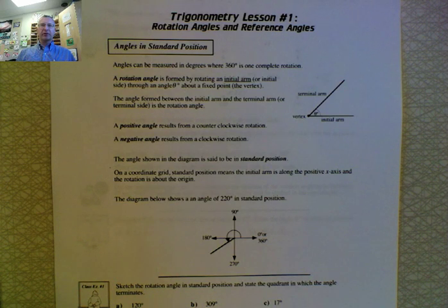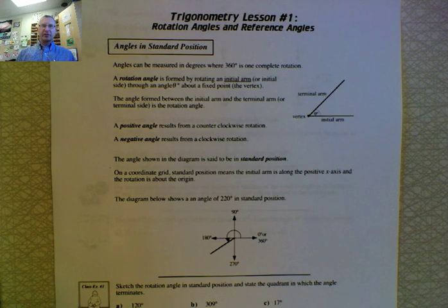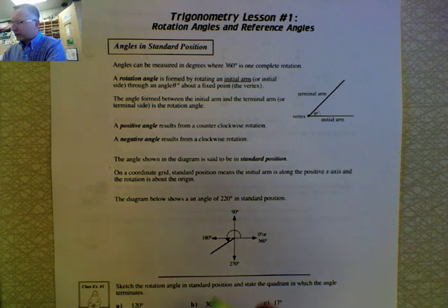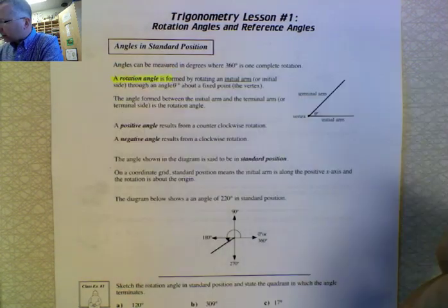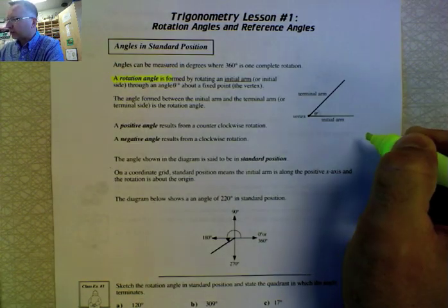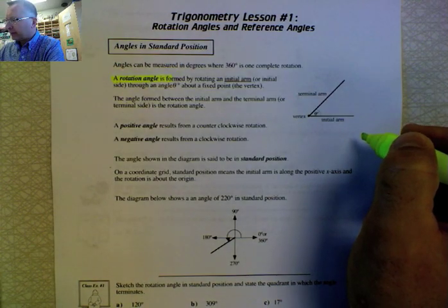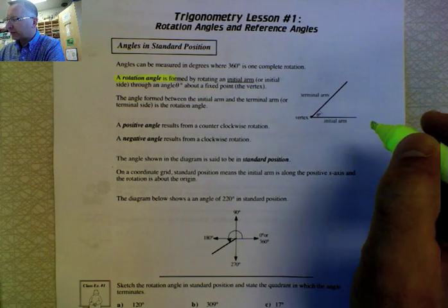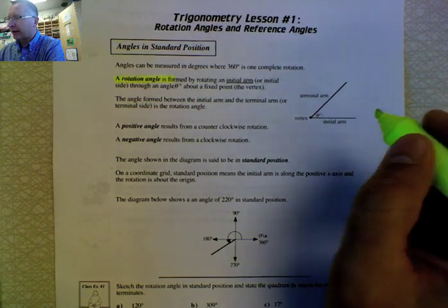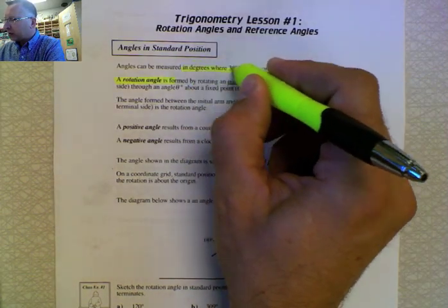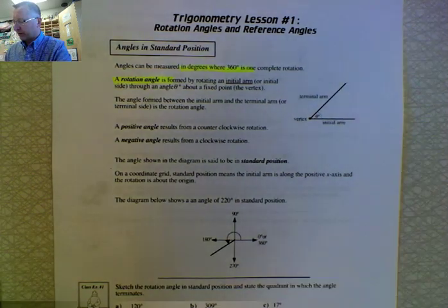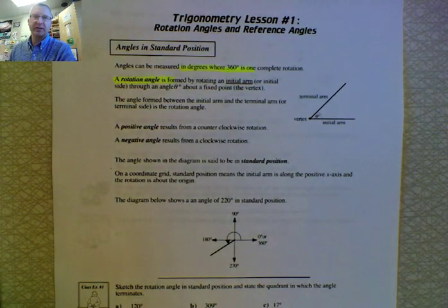The first thing we're going to talk about are angles in standard position. The first key concept is something called a rotation angle — that means we actually draw angles in our coordinate plane. We're going to draw angles initially between 0 and 360 degrees.